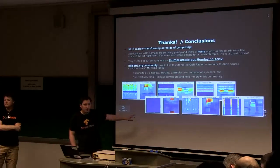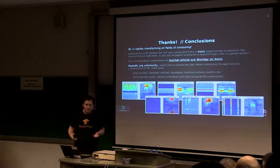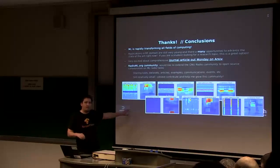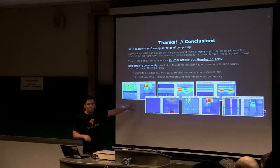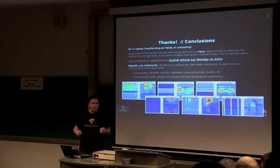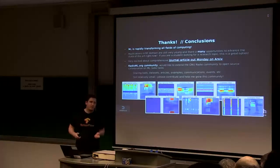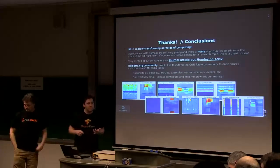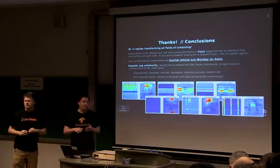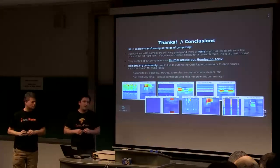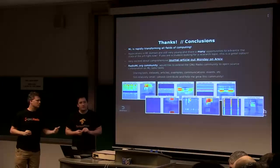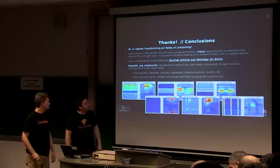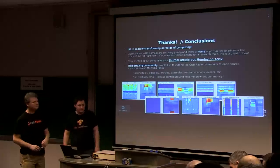Q: How does this compare to Shannon capacity? A: The paper coming out Monday has very good baselines — comparisons to PSKs and DPSKs with Hamming codes, right up against capacity. We're showing much more robustly the capacity achievable with this approach, and you can come very close to the channel limit.